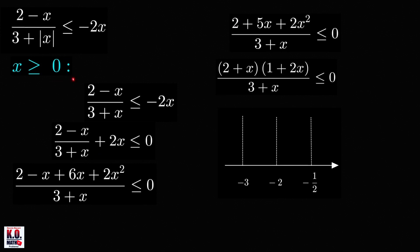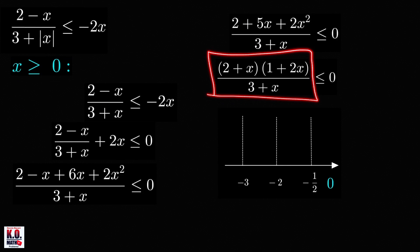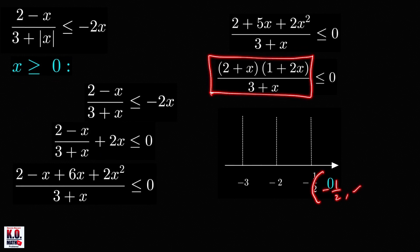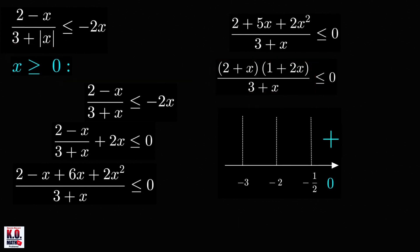Because x here is restricted to non-negative real numbers, we are only interested in the sign of this left-hand side in the subinterval negative one-half to infinity. If we use a test value from this interval, say x equal to 0, and plug it into this expression, we'll get 2 times 1 over 3, which is a positive number. Therefore, the value of this expression in the interval negative one-half to infinity is positive. And because the value is positive, or greater than 0, for all x greater than or equal to 0, we conclude that there are no solutions that are greater than or equal to 0.